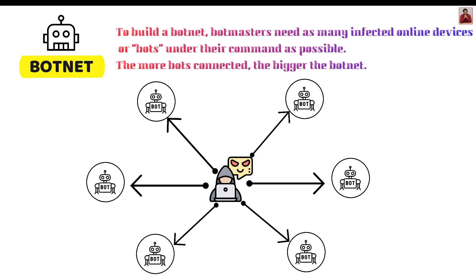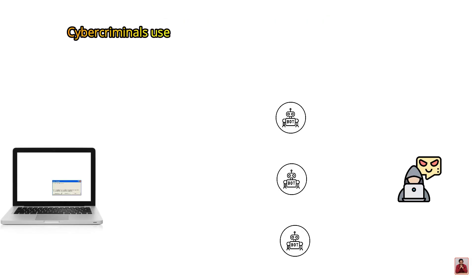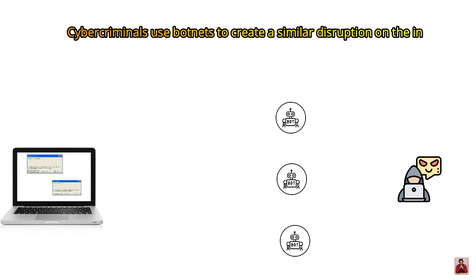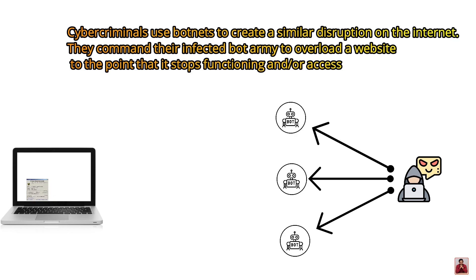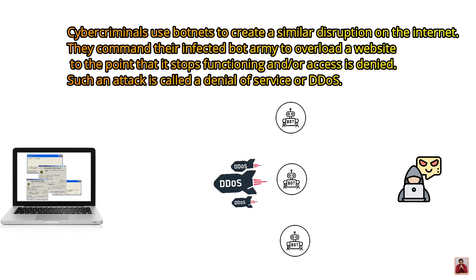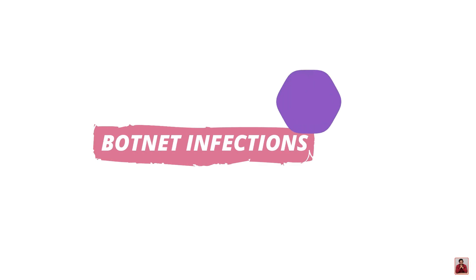To build a botnet, botmasters need as many infected online devices or bots under their command as possible. The more bots connected, the bigger the botnet; the bigger the botnet, the bigger the impact — so size matters. The criminal's ultimate goal is often financial gain, malware propagation, or general disruption of the internet. Cybercriminals command their infected bot army to overload a website to the point that it stops functioning — an attack called a denial of service or DDoS attack.